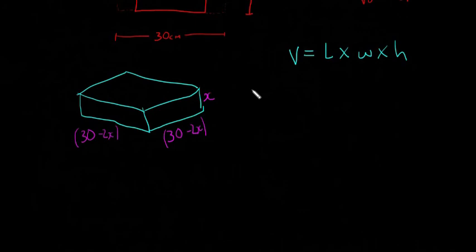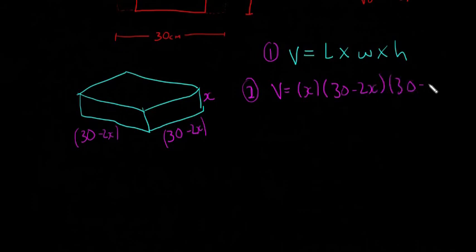I'm going to write that out. This is going to be, I'll just put a little one around it. This is our step one. V is equal to X. Or you could actually, I guess you could call this step one and this step two. Because now we're writing it all in one term. And then 30 minus 2X and 30 minus 2X.